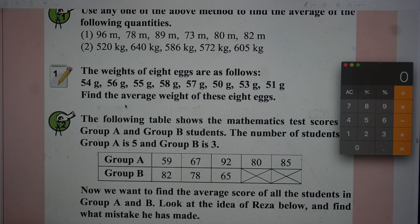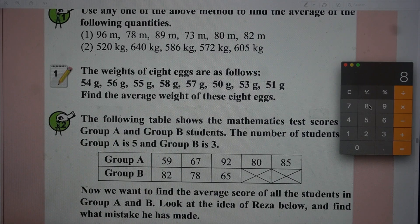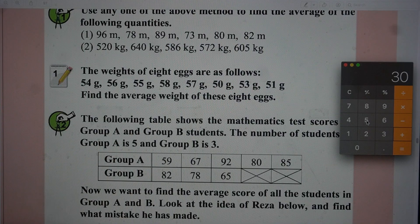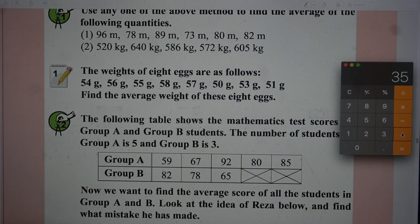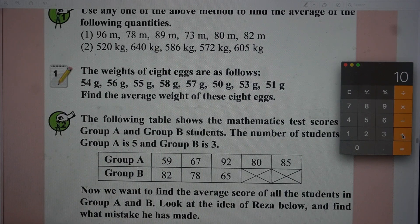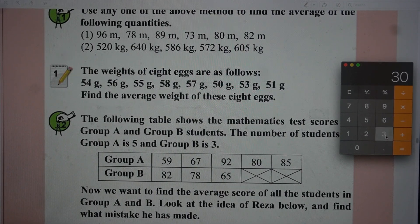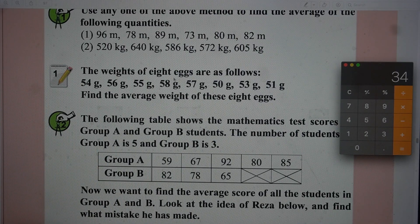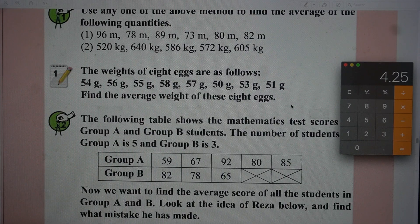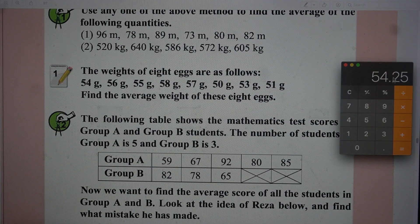The weights of the 8 eggs are as follows, find the average weight of these 8 eggs. Using the subtraction method, subtracting 50 from each: 4 plus 6 plus 5 plus 8 plus 7 plus 0 plus 3 plus 1 equals 34. Total number is 8, so 34 by 8 is 4.25, plus 50. The answer will be 54.25.